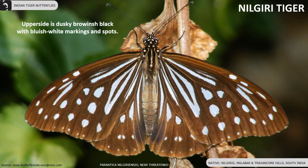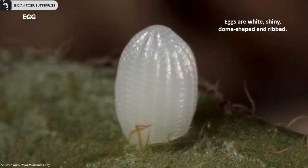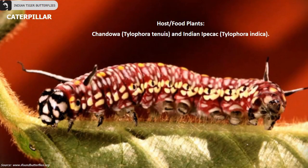Nilgiri Tiger is a near threatened species of butterfly found in Nilgiri, Malabar and Travancore hills of South India. The upper side is dusky brownish black with bluish white markings and spots. The underside is browner and similar to the forewings. The host plants of Nilgiri Tiger butterflies are Chandova and Indian ipecac.